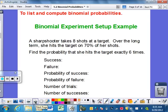So we're going to jump right into an example of what you might see for a binomial setup. A sharpshooter takes eight shots at a target. Over the long term, this person hits 70% of her shots, and then find the probability that she hits the target exactly six times.